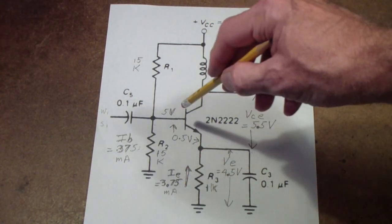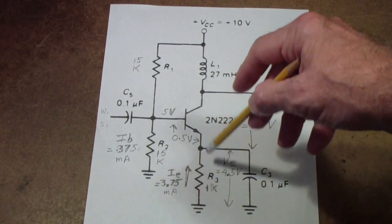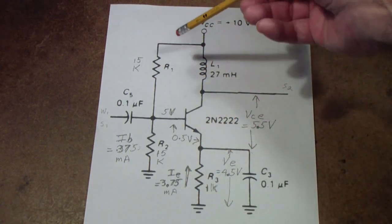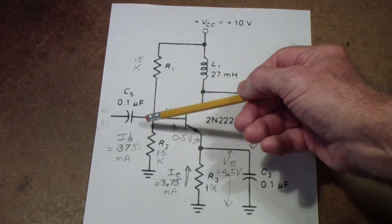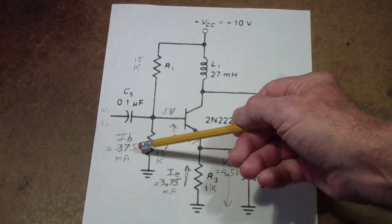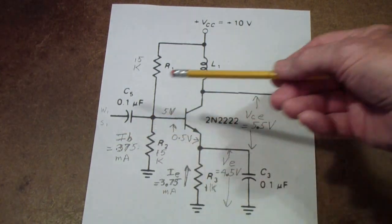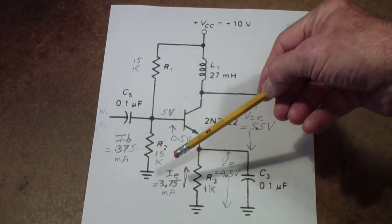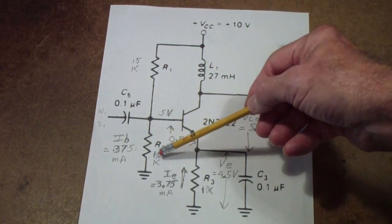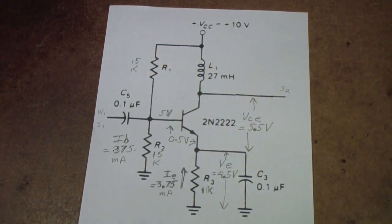Once you have decided the emitter current, you generally want to keep the base current down below a tenth of the emitter current. That's why you chose 15K resistors. The base current is approximately 0.375 milliamps or 375 microamps. That's one-tenth of the emitter current. Based on that, you calculate these two values. I simply chose 15K because those are nice standard values.